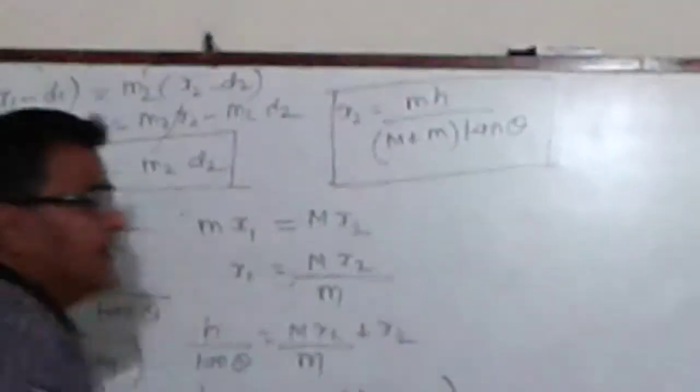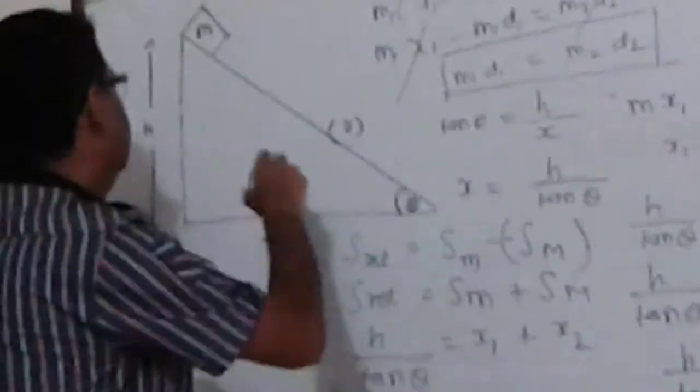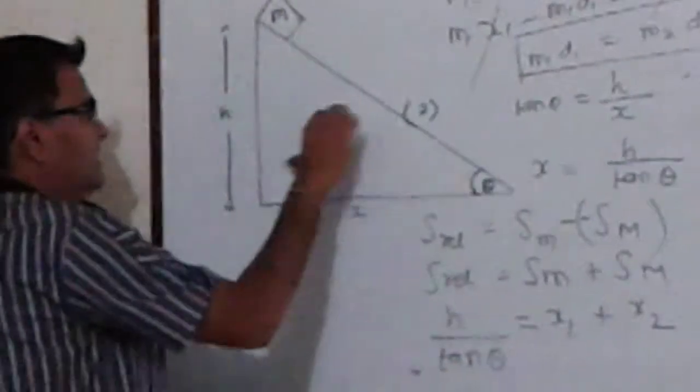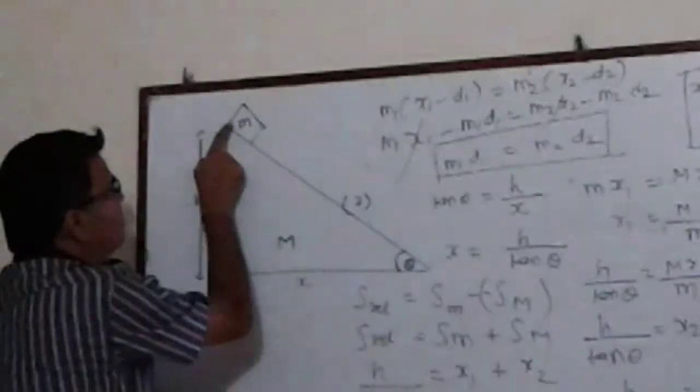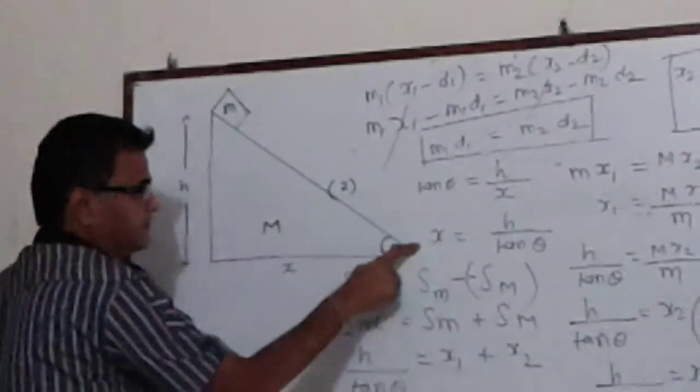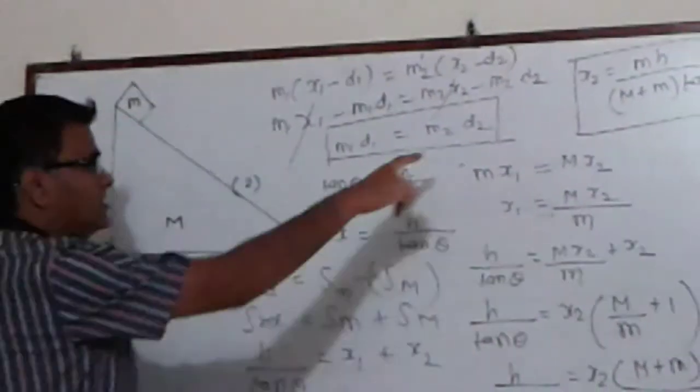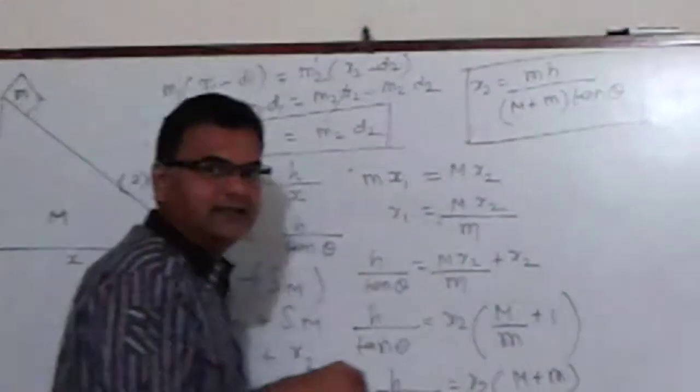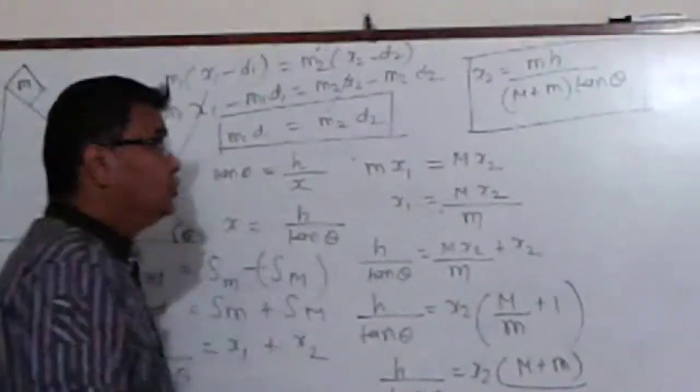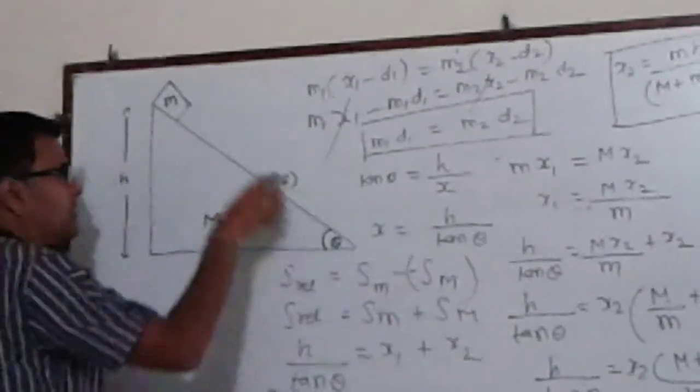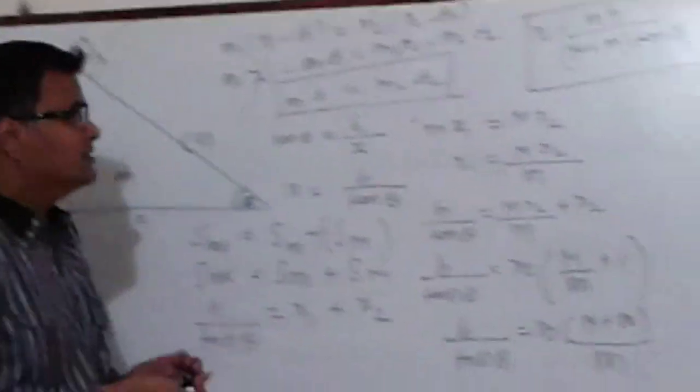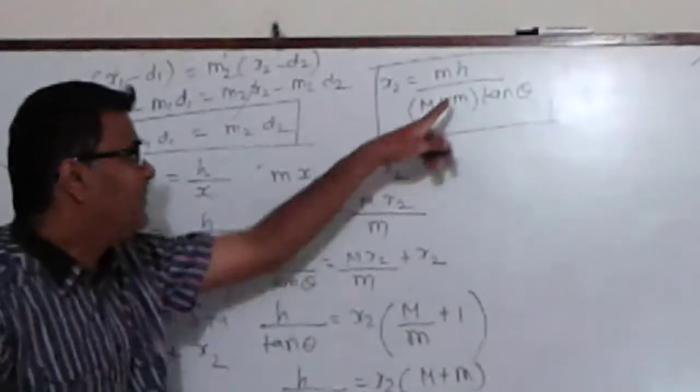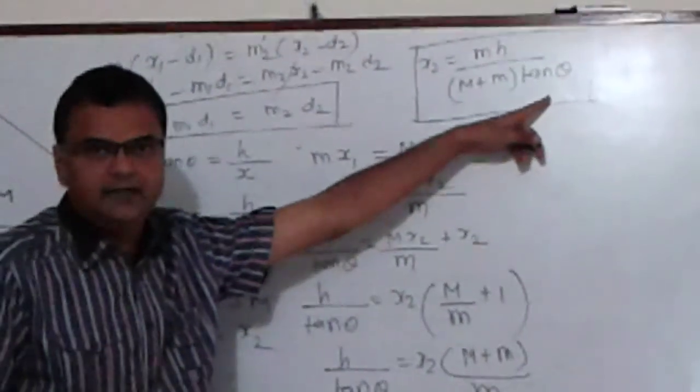So this is end of part 1 where we have calculated the distance moved by the wedge to the left when the block small m moves from top to bottom. The distance moved by the wedge is given by m*h upon (m + M) into tan θ. In part 2, to find the velocity of this wedge as the block comes down, we will have to use this result which is m*h upon (m + M)*tan θ.